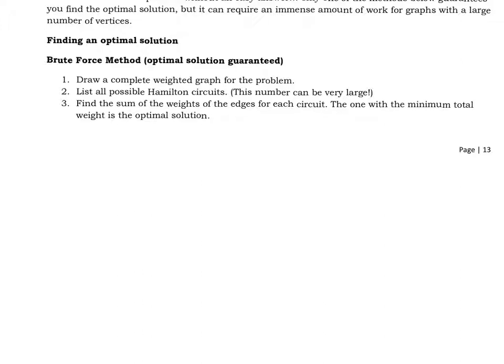If there wasn't one drawn already, we're going to need to draw a complete weighted graph for the problem. For the brute force method, we have to list all possible Hamilton circuits, and yes, this number can be very large. That's why you would want to have a computer do the work for you if it was any more than, in our case, four vertices. Find the sum of the weights of the edges for each circuit. The one with the minimum total weight is the optimum solution.